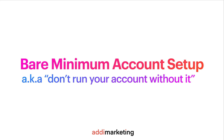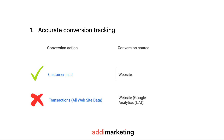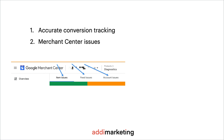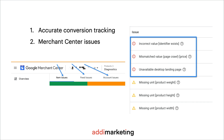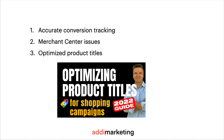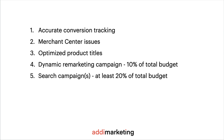Let's look at the bare minimum account setup, or as I call it, don't run your account without it. Accurate conversion tracking: make sure you have native Google Ads conversion tracking — don't import analytics conversions. In the Merchant Center, fix all account and feed-related issues and fix all item disapprovals. Optimize product titles in the feed — I've made a video about it, check the link in the description. Run dynamic remarketing and search campaigns. Search campaigns sometimes bring more revenue with better ROAS in e-commerce accounts. Dedicate at least 20 to 50 or 60% of total budgets to search and up to 10% to remarketing campaigns.